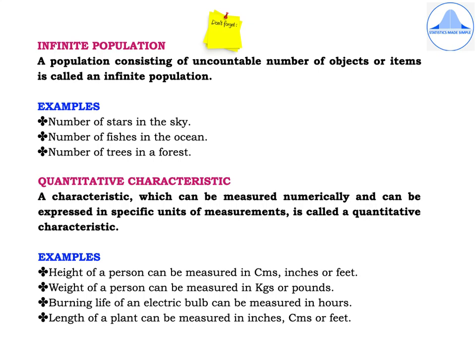A quantitative characteristic is one which can be measured numerically and expressed in specific units of measurement. For example, the height of a person can be measured in centimeters, inches, or feet. The weight of a person can be measured in kgs or pounds. The burning life of an electric bulb can be measured in hours. The length of a plant can be measured in inches, centimeters, or feet.